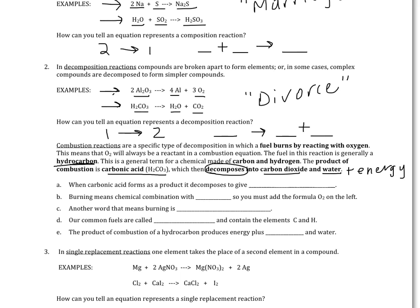When carbonic acid forms as a product in a combustion reaction, it immediately decomposes into carbon dioxide and water. In fact, when you see in the wintertime what looks like steam coming out of the tailpipe of your car, that's water vapor — the gas form of water — and carbon dioxide. The energy is retained in the engine to do the work of the car.